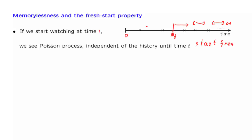The Poisson process starts fresh at time t. We have the fresh start property. Similar to the language we use for the Bernoulli process, the fresh start property means that you see a process that's independent of the past and which has the same statistical properties as if this was time 0, as if the process was just starting right now.